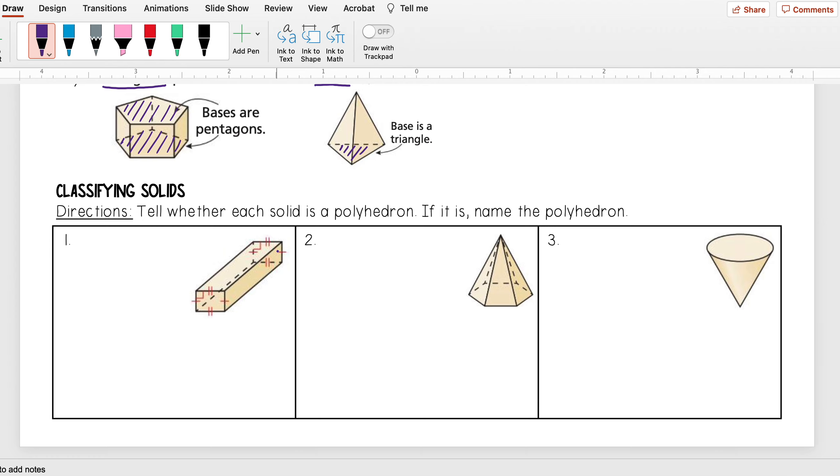I want to classify the solids. So I'm going to tell whether each solid is a polyhedron, and if it is, I'm going to name the polyhedron.